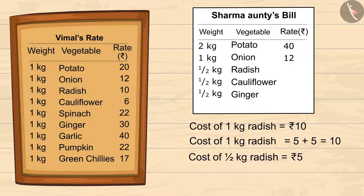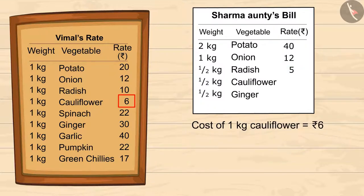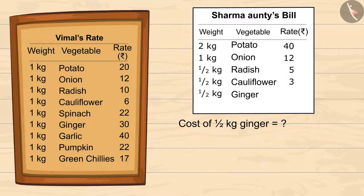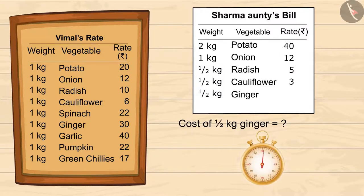The cost of half a kg radish is 5 rupees. Similarly, if 1 kg cauliflower costs 6 rupees, half of it will cost 3 rupees. Now we are left with half a kg of ginger, which means half the price of 1 kg. You can pause the video and calculate it.